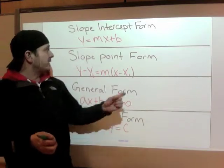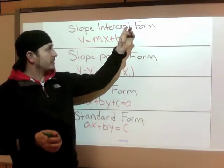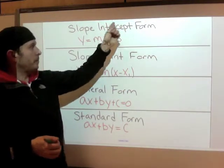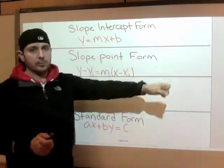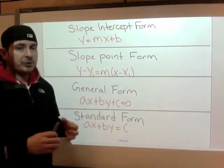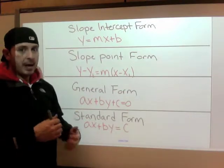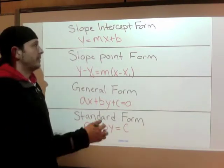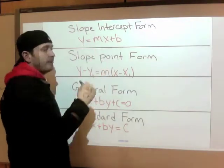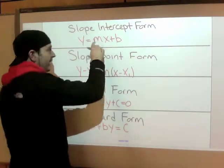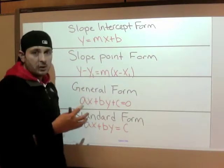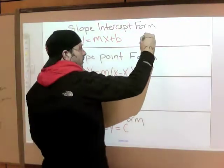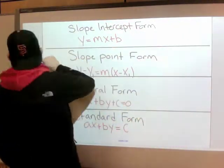What we're going to do is take a look at the forms we learned last day. Slope-intercept form gives you a slope and an intercept. If you ever see slope-intercept form or you see the letter M, that means slope — M equals slope.